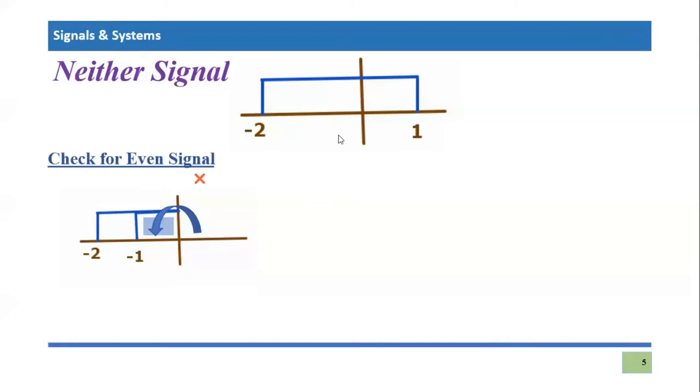Now let's test the signal for odd signal. So for odd signal, what we have to do, we have to turn this already folded signal across the X axis as well. So in first step, we just folded across the Y axis and now we are going to fold this signal across the X axis. So what is going to happen?